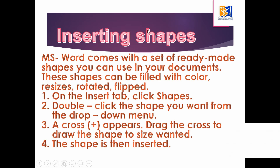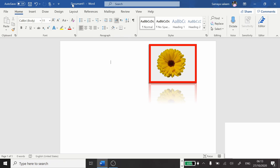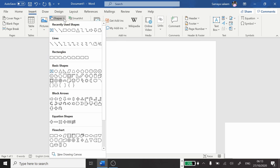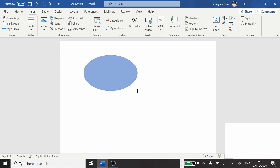Now, inserting shapes. Microsoft Word comes with a set of ready-made shapes you can use in your documents — these shapes can be filled with color, resized, rotated, and flipped. On the Insert tab, click on Shapes and choose the shape you want from the drop-down menu. Your mouse will change into a cross sign. Press and drag the mouse to draw the shape to the size you want.